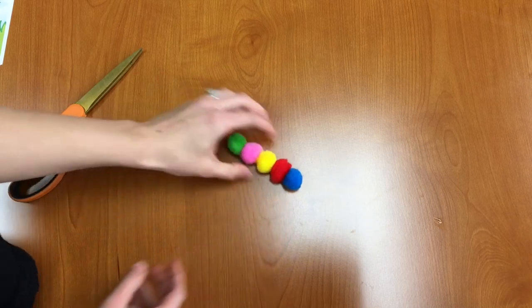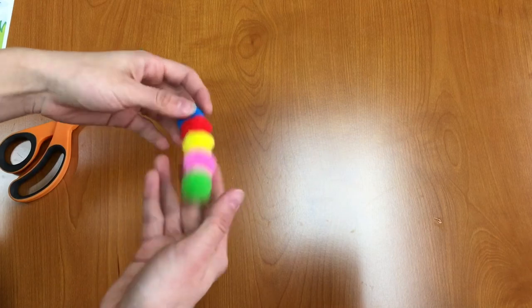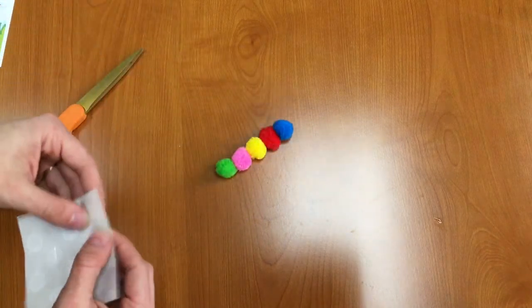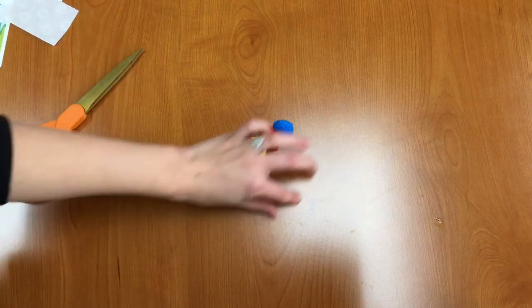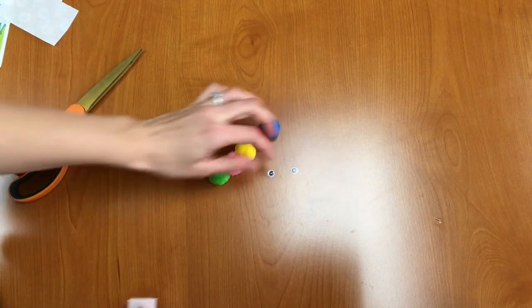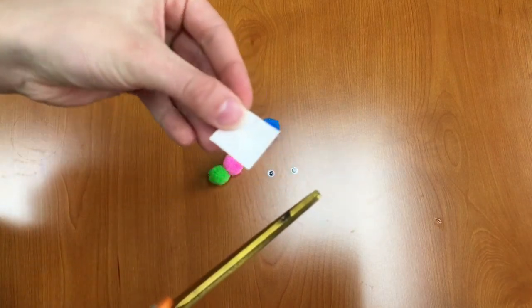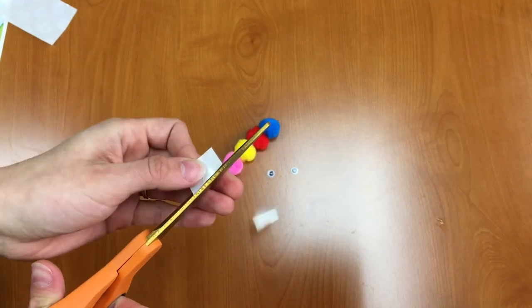Now we have our caterpillar's body but we still need to add something to it in order to make it look more like a caterpillar. We need some eyes. So what I'm going to do is I'm going to take one glue dot, and because my googly eyes are so tiny I'm going to cut this glue dot in half. So you can kind of see the glue dot in there and I'm just going to cut it directly in half.